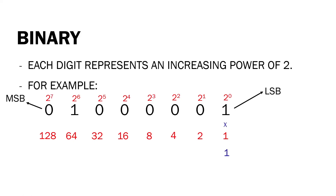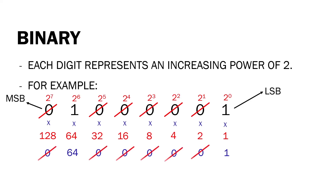Now we multiply each bit by its positional value. One times one is equal to one, and zero multiplied by two is equal to zero, zero multiplied by four is equal to zero — any number multiplied by zero is equal to zero. So the next positions are also zero, and one multiplied by 64 is equal to 64, and zero multiplied by 128 is equal to zero. Since zeros represent the off state, we will not include them — we will just take 64 and 1.